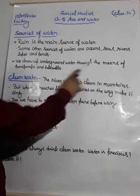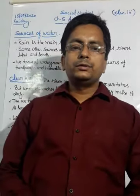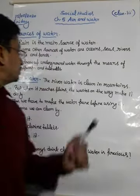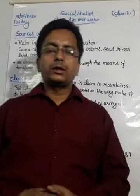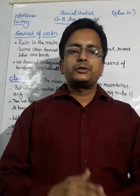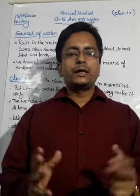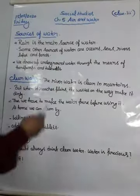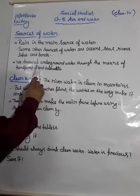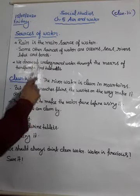We draw up underground water through hand pumps and tube wells. By digging, we can draw up underground water through hand pumps and tube wells, which we use in our villages to irrigate our crops. At home, if there is no electricity, we can get water from hand pumps. These are the sources of underground water.